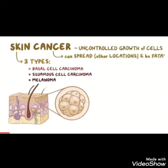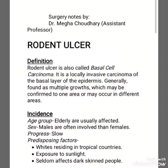Types of skin cancer: skin cancer is the uncontrolled growth of cells due to DNA mutation caused by harmful UV radiations of the sun or arsenic. This uncontrolled growth can produce skin cancer. There are three types: basal cell carcinoma, squamous cell carcinoma, and melanoma. Today we are studying rodent ulcer, that is basal cell carcinoma.